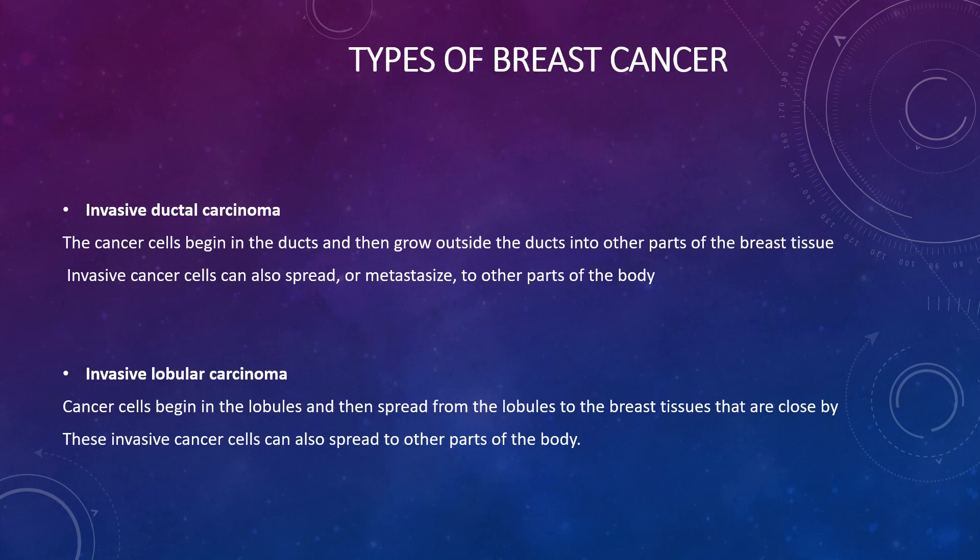There are two main types of breast cancer. In invasive ductal carcinoma, cancer cells begin in the ducts and then grow outside the ducts to other parts of the breast tissue, and can also metastasize to other parts of the body. In invasive lobular carcinoma, cancer cells in the lobules spread to the nearby breast tissues and can also spread to other parts of the body.